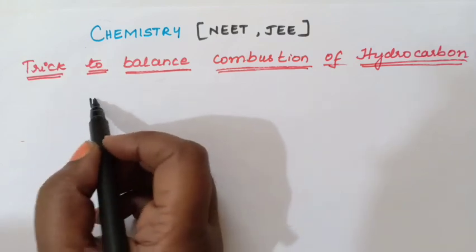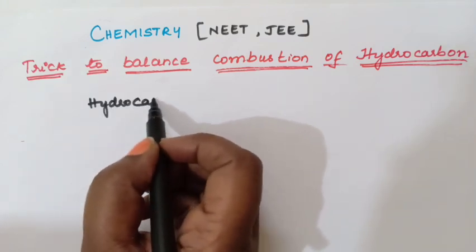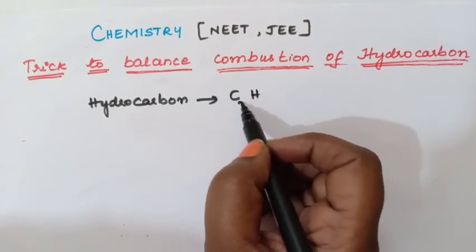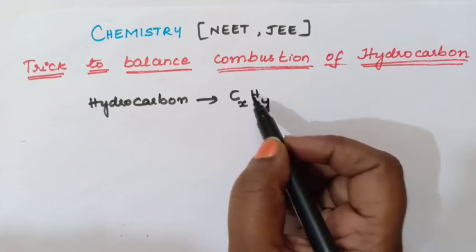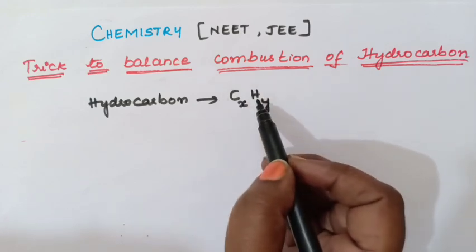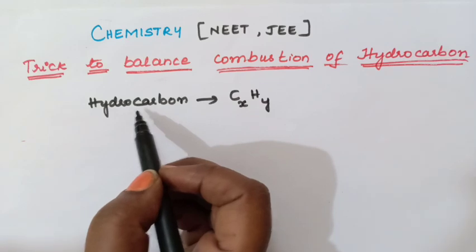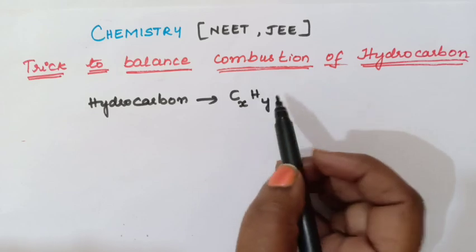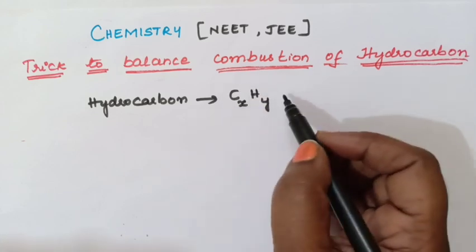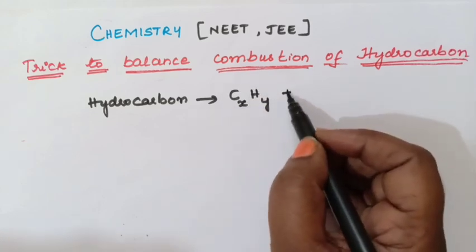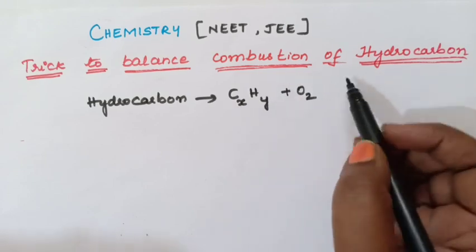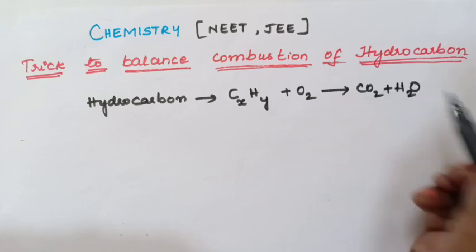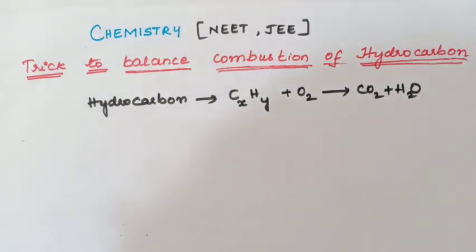Hydrocarbon means a compound containing carbon and hydrogen — C x times and H y times. So if carbon and hydrogen are both present in a compound, it is called a hydrocarbon. Combustion means burning a hydrocarbon in the presence of oxygen, which gives products called carbon dioxide and water. This is called a combustion reaction.